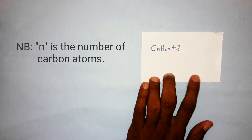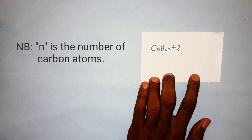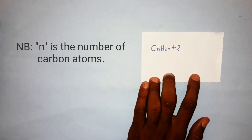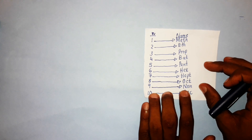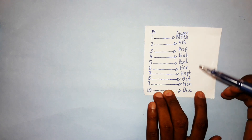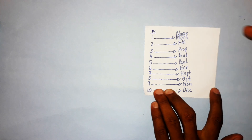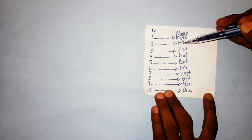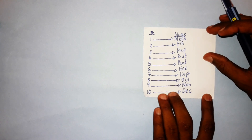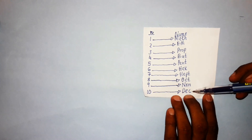How are alkanes named? When you are naming them, it depends on the number of carbon atoms. We use prefixes indicating the number of carbon atoms. When the number of carbon atoms is one, the prefix becomes 'meth-'. When it is two, 'eth-', and so on. When the number of carbon atoms is ten, the prefix becomes 'dec-'.